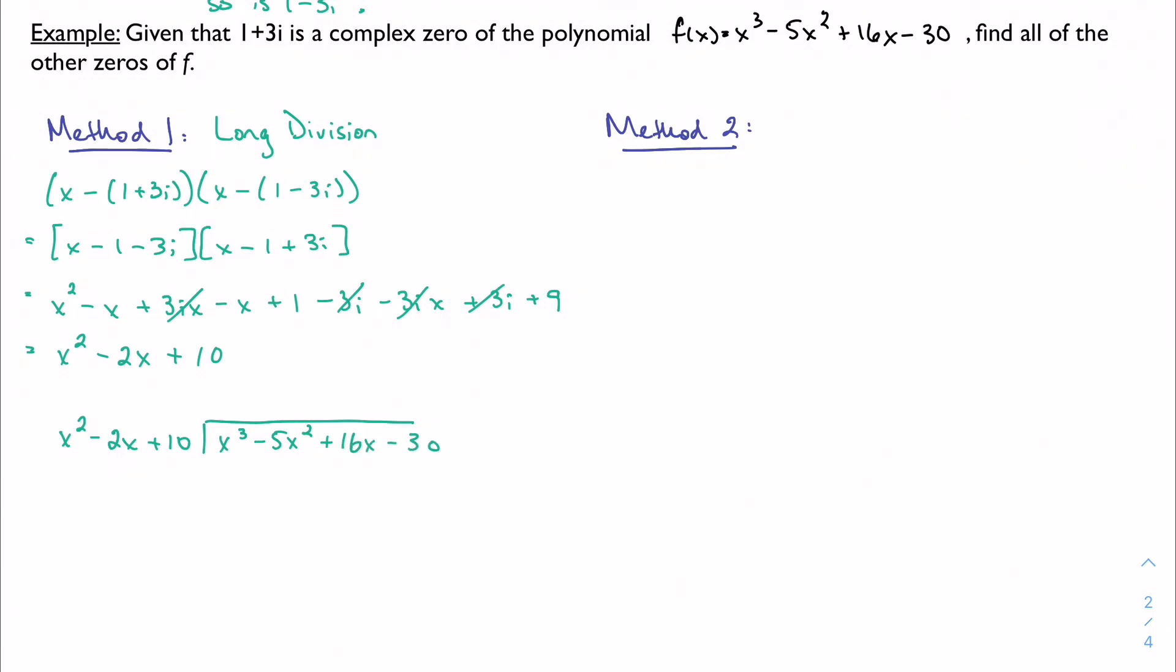But I can now go through and divide. So x squared goes into x cubed, x times. I get to multiply through, minus 2x squared, minus 2x squared, plus 10x.